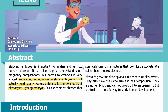Abstract: Studying embryos is important to understanding how humans develop. It can also help us understand some pregnancy complications, but access to embryos is very limited. We wanted to find a way to study embryos without actually needing any. We used stem cells to grow models of blastocysts — young embryos. Our experiments showed that stem cells can form structures that look like blastocysts. We called these models blastoids. Blastoids grow and develop at a similar speed as blastocysts, and have the same size and cell composition. They are not embryos and cannot develop into an organism, but blastoids are a useful way to study human development.